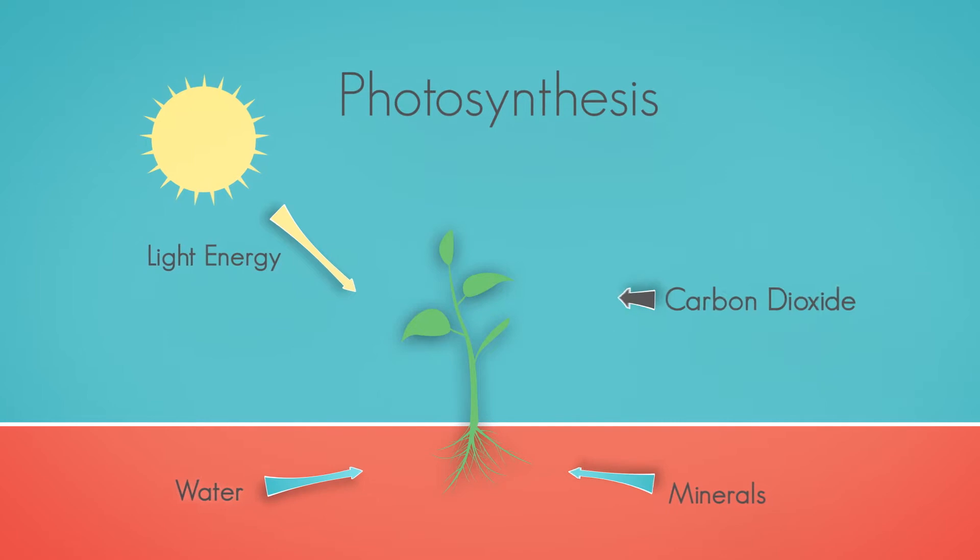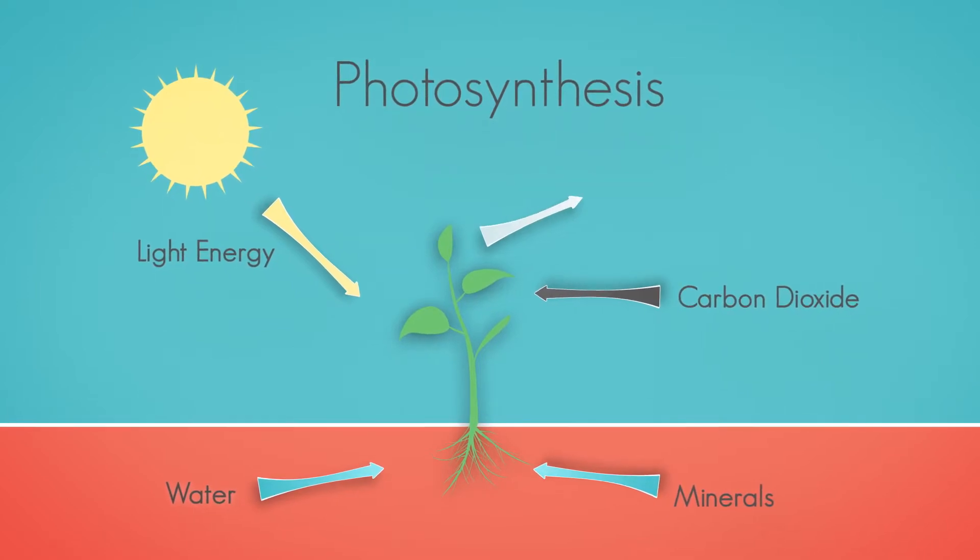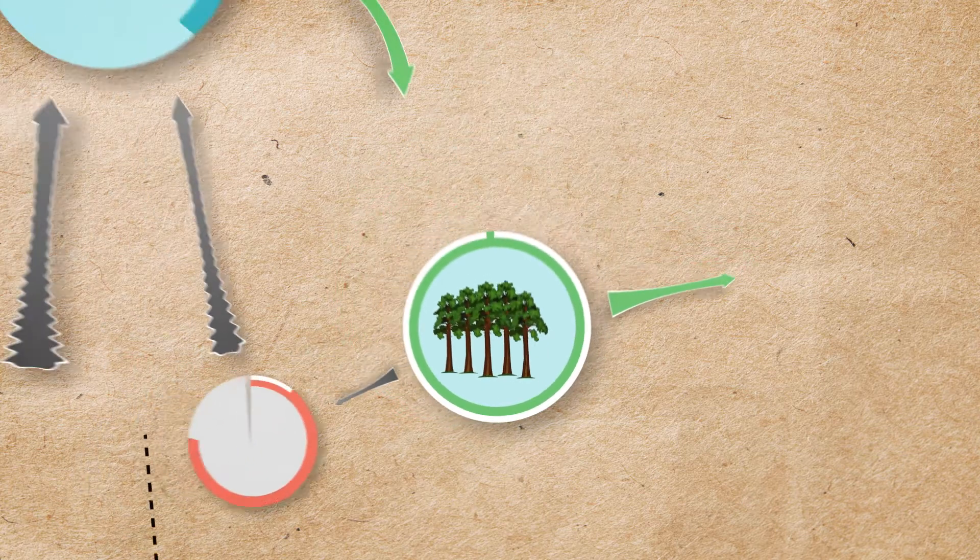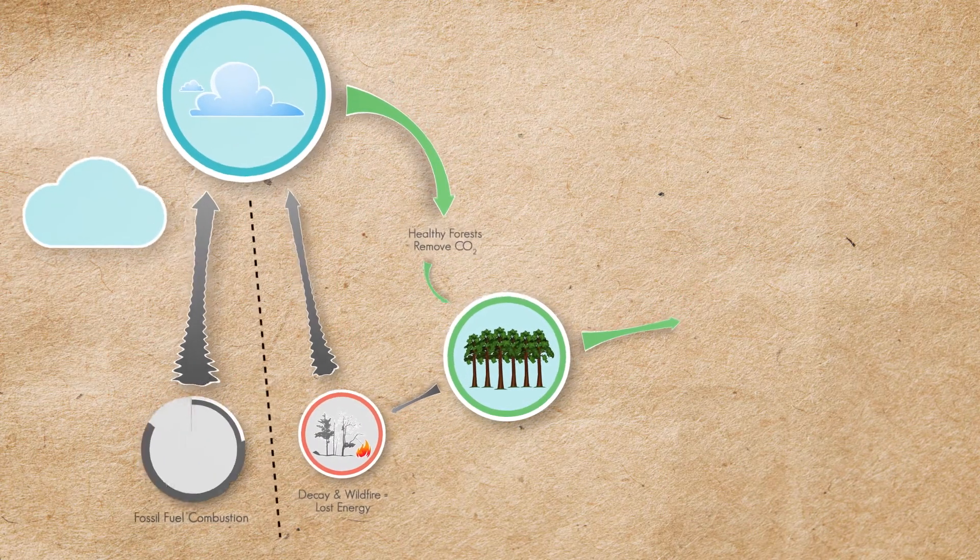Let's go back to your fourth grade science class. You remember photosynthesis? The process in which plants and trees absorb CO2 and release oxygen? Well, that's the basis of the forest products industry's role in the larger carbon cycle.